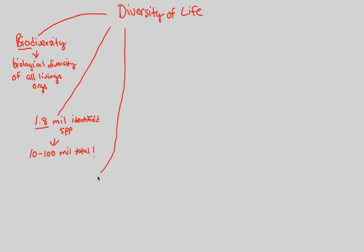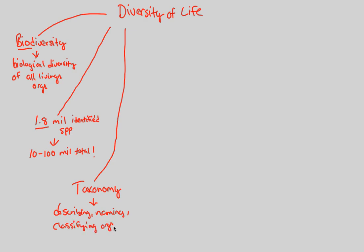In order to study the diversity of life, you cannot just haphazardly go out and say you're going to study it. You have to utilize techniques, and a lot of those techniques are based on a study known as taxonomy. Taxonomists discover and look at biodiversity, because taxonomy is all about naming, describing, and classifying organisms. This study is only possible because of evolution, because of natural selection, and because of the diversity of life.